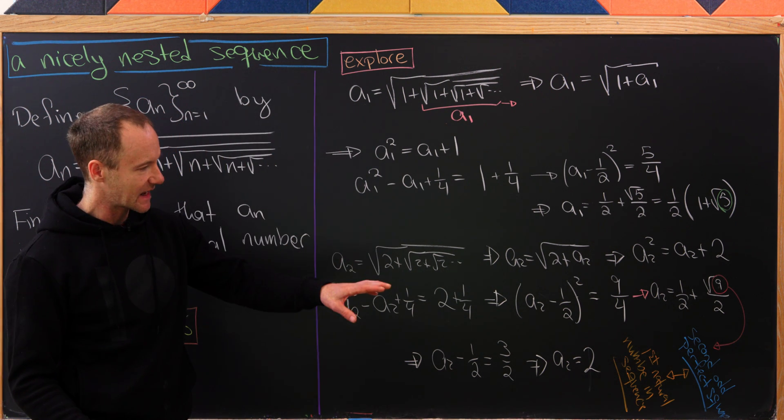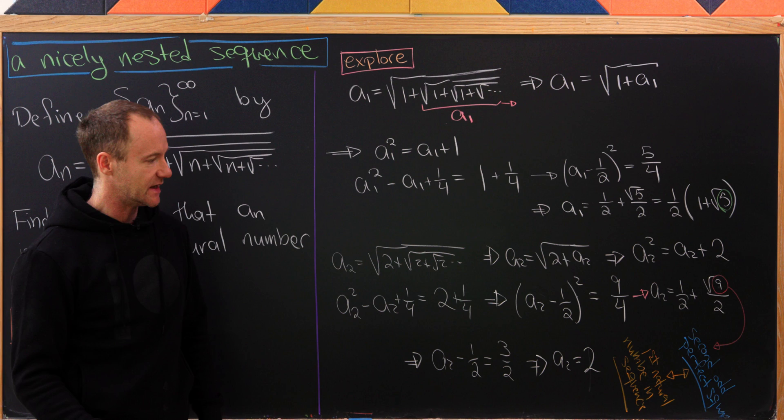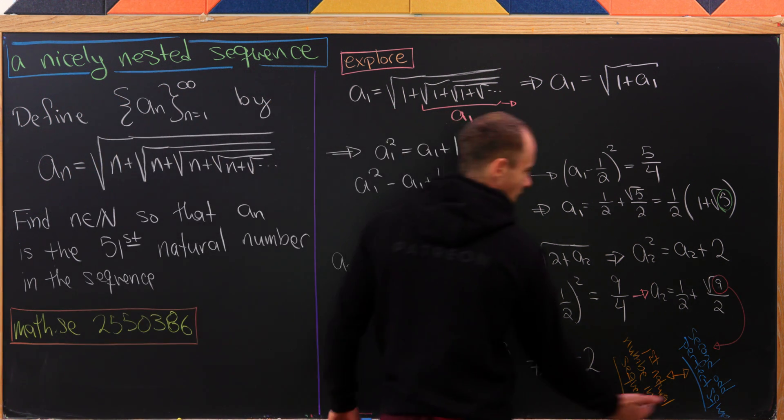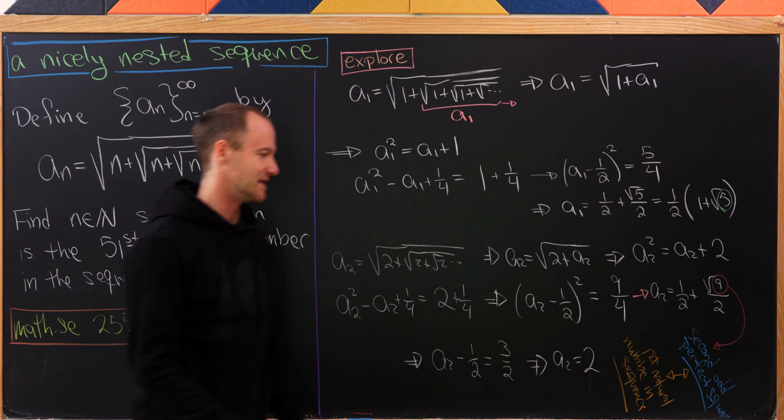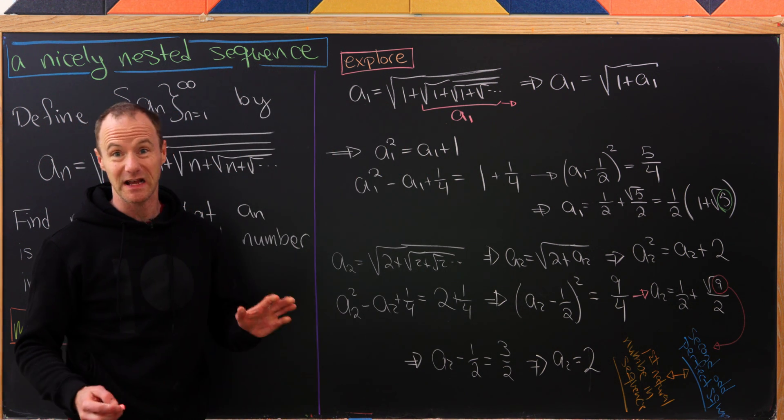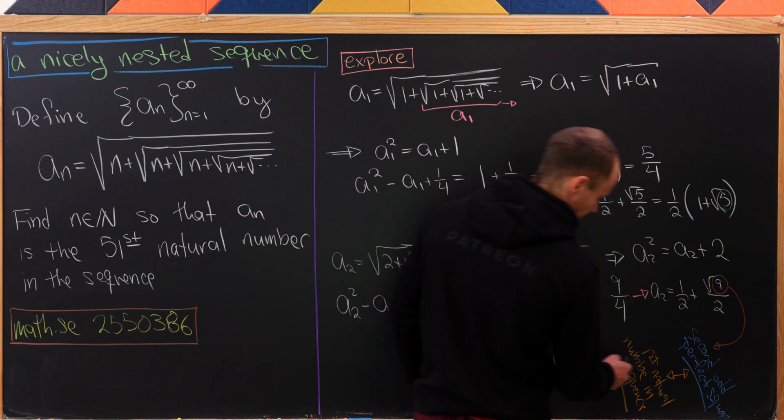To reiterate, the 2nd odd perfect square corresponds to the 1st natural number in the sequence, and it's the 2nd odd perfect square which lands in this square root.